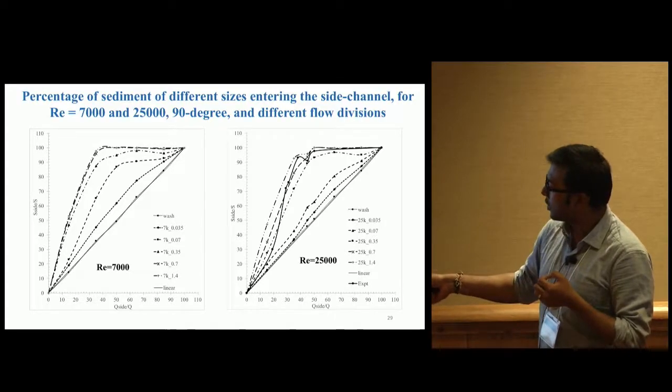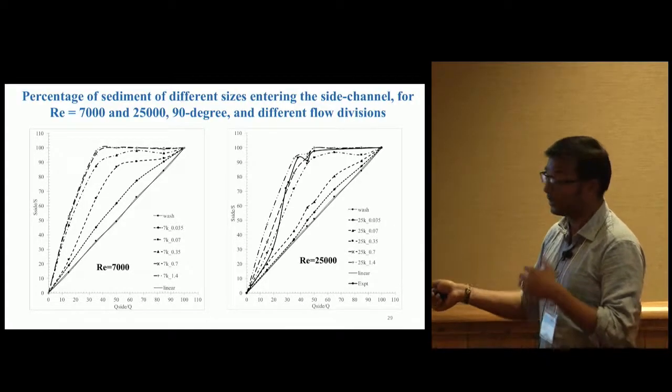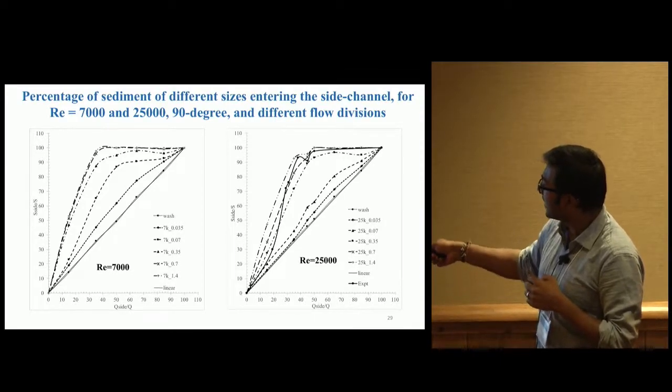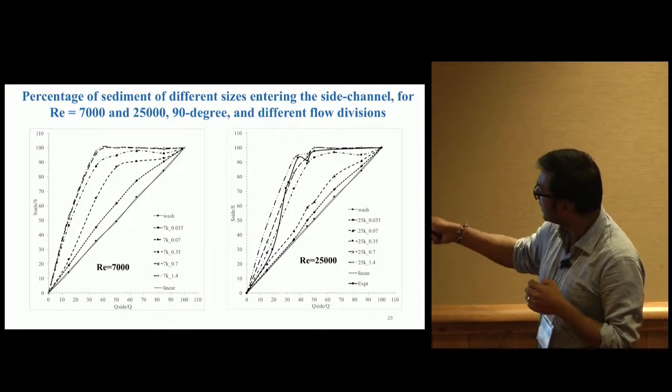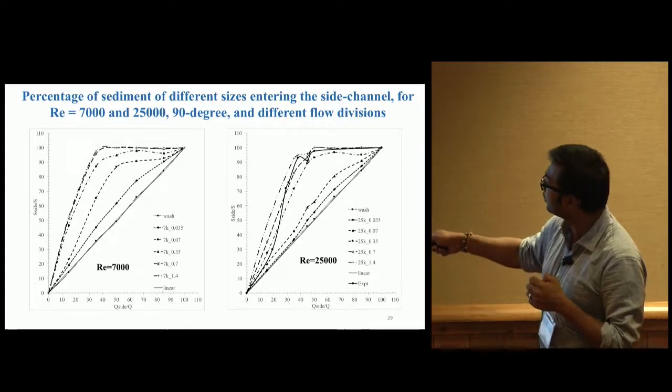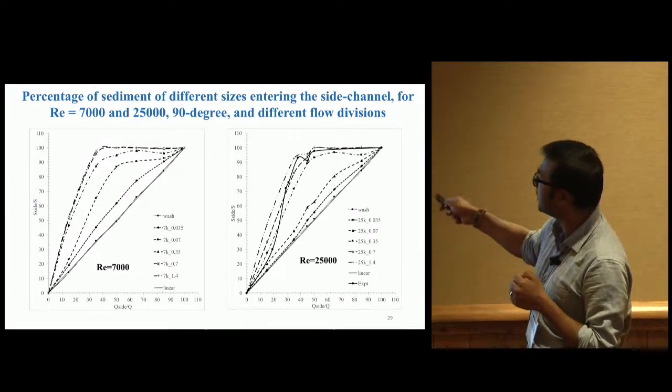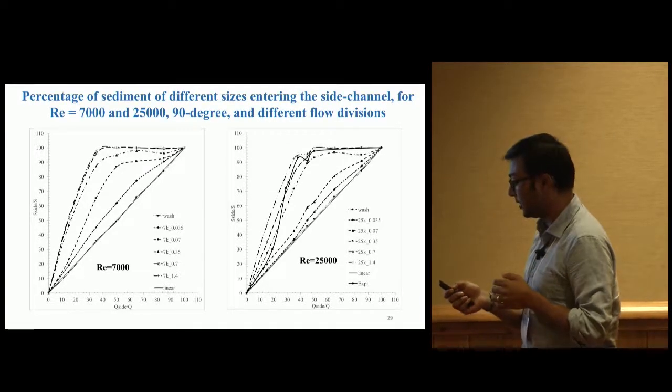For Reynolds 7,000 and 25,000, these are two turbulent cases. The bold line is from experiments. Our numerical simulation data matches the experiments pretty well and shows the trend.